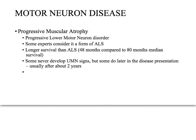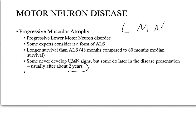Progressive muscle atrophy is another motor neuron disease, typically involving only lower motor neurons. Upper motor neuron involvement, if it occurs, is usually very late — after about two years. This condition has a longer median survival of about 80 months, compared to ALS which has a median survival of 36 to 48 months. Some experts consider it a form of ALS, others do not.